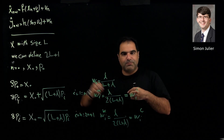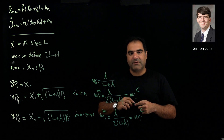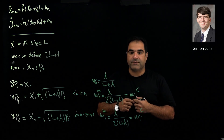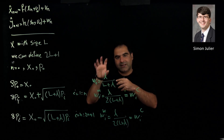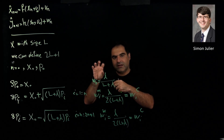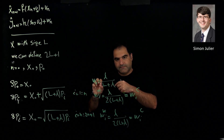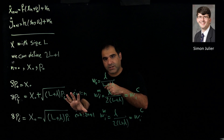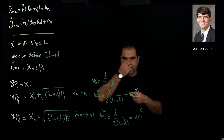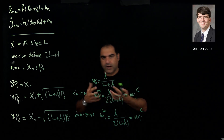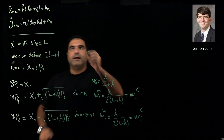Coming back to the main Kalman filter algorithm: we calculated the mean and variance of the states vector, predicted measurement, and used them to run the Kalman filter algorithm. In the Unscented Kalman Filter, we will do the same thing.